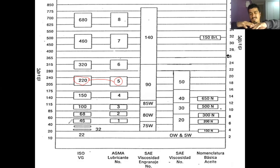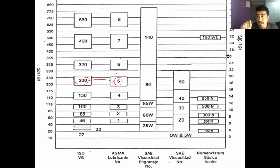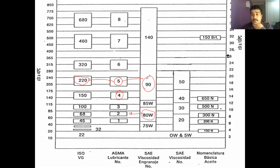Un grado AGMA 5 tiene equivalencia directa con el ISO VG 220. Pero estos grados no dan el valor exacto de viscosidad, sino el rango. Por ejemplo, un grado 5 está entre 190 y 245 centistoke a 40 grados Celsius. Con eso se puede descartar rápidamente si no sirve para el equipo. Si se quiere algo más específico, se va a la ficha técnica donde dan los valores reales a 40 y a 100 grados Celsius. El SAE abarca los grados 4, 5 y 6 del AGMA, y el SAE 80W es prácticamente el grado 2.